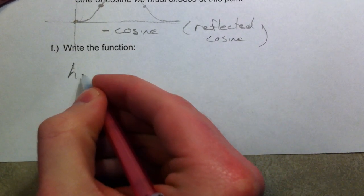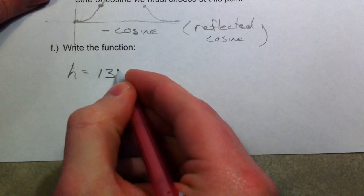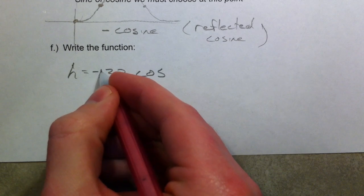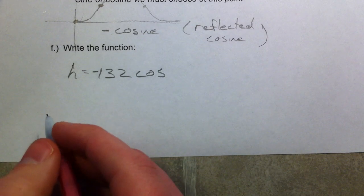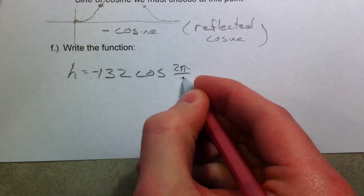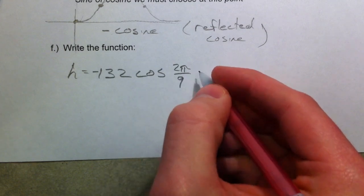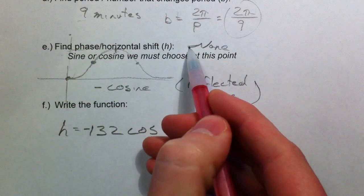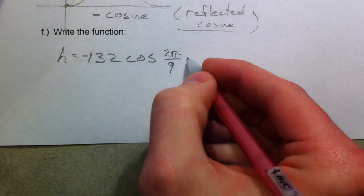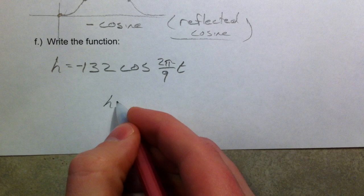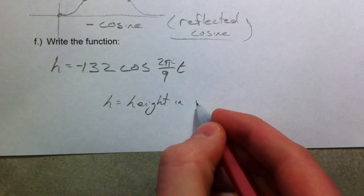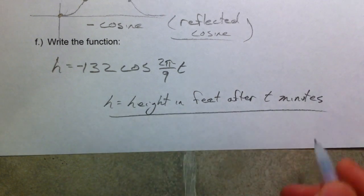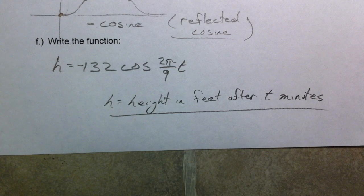So h equals — because we're talking about height — negative 132 times cosine of (2π/9 times t), plus 132. We use negative 132 as the amplitude so it starts at the valley rather than the peak. Our b term is two pi over nine, there is no horizontal phase shift, and we add 132 as the vertical shift. H equals height in feet after t minutes, and there we have our first story problem of writing sinusoidal functions.